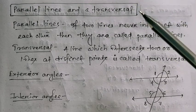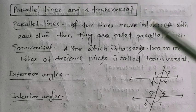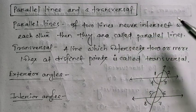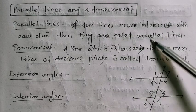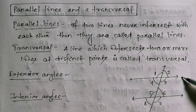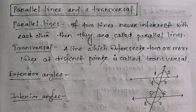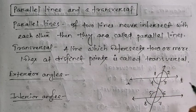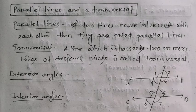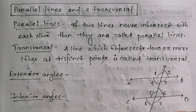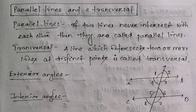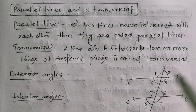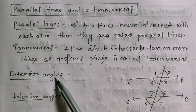Previously we know that parallel lines are two lines that never intersect each other. If this is line AB and this is another line CD, and AB and CD never intersect with each other, then they are called parallel lines.